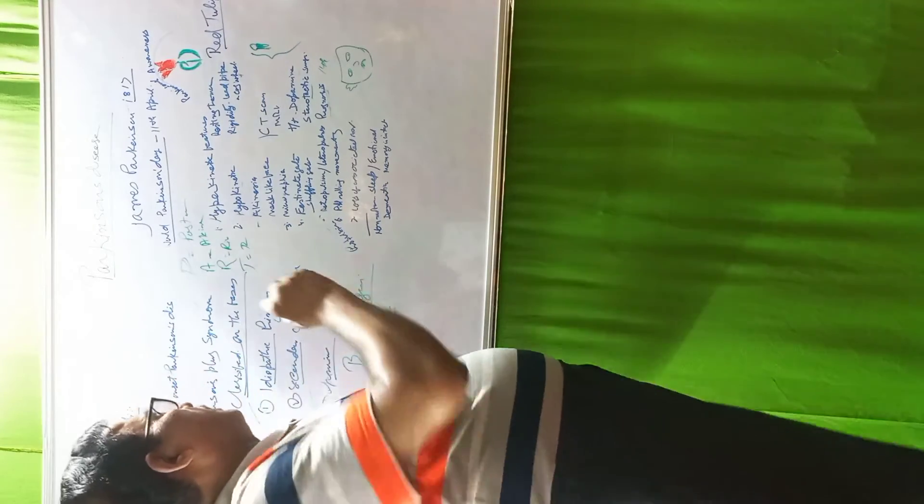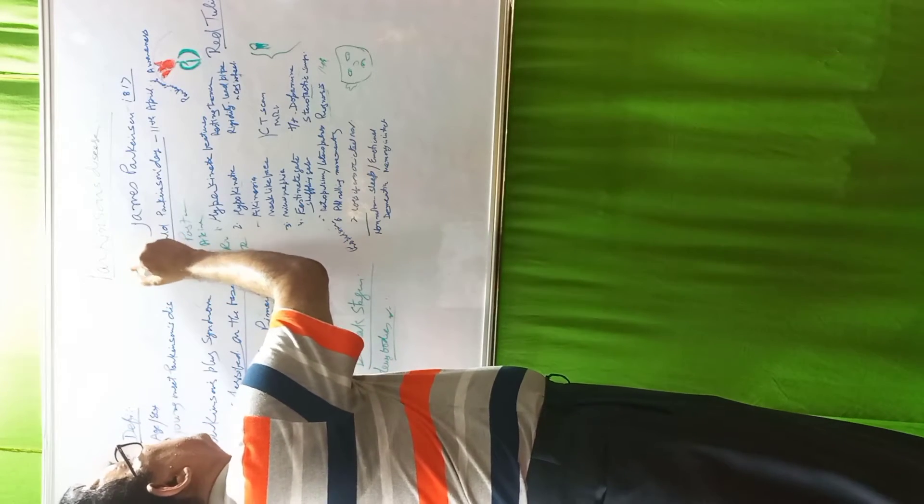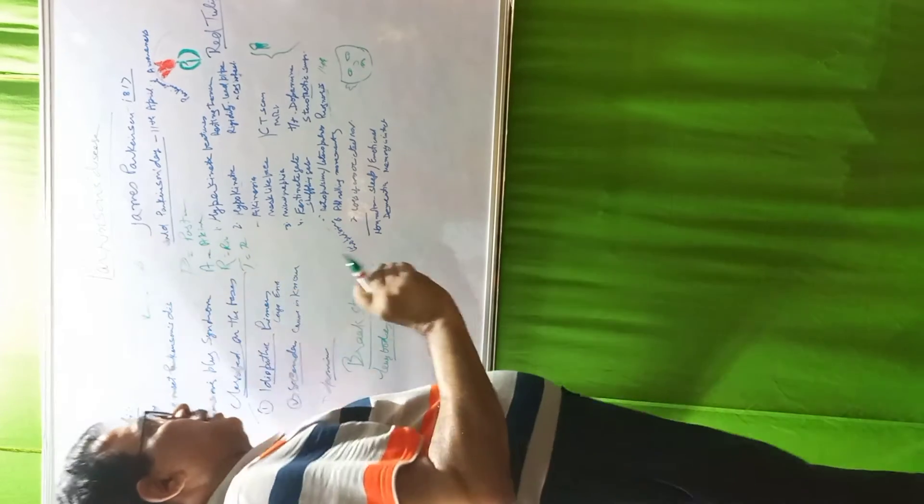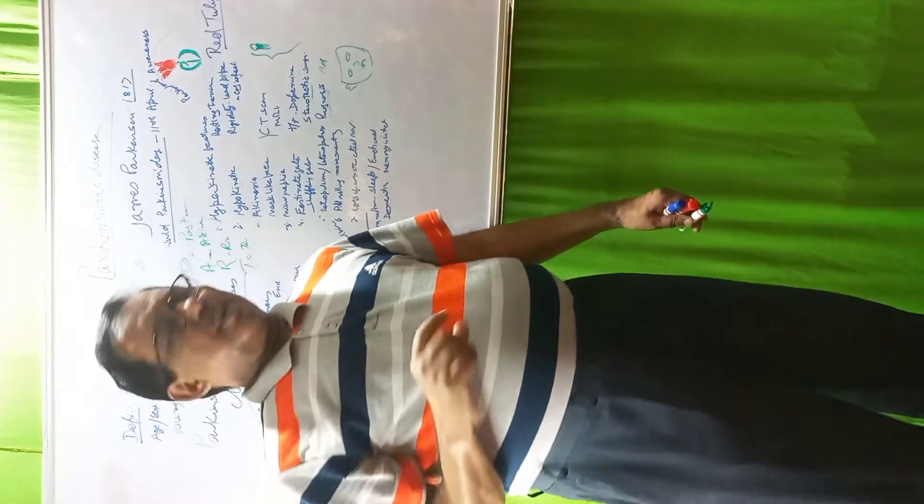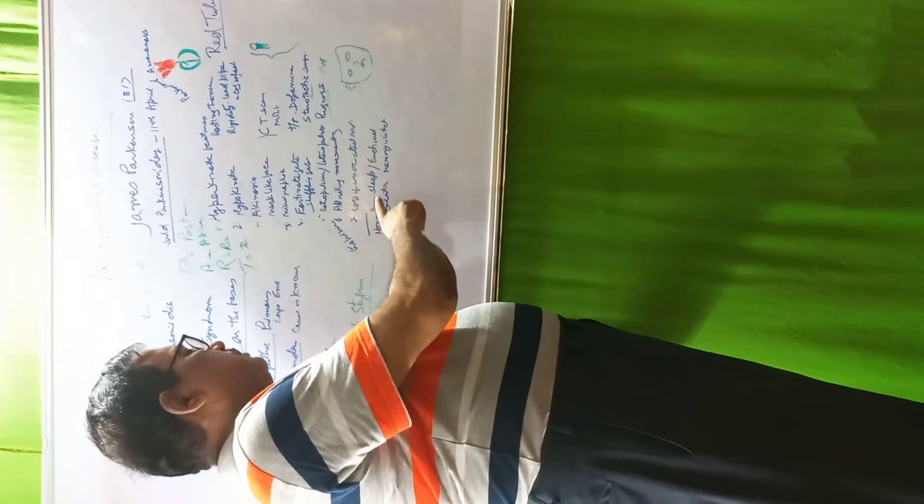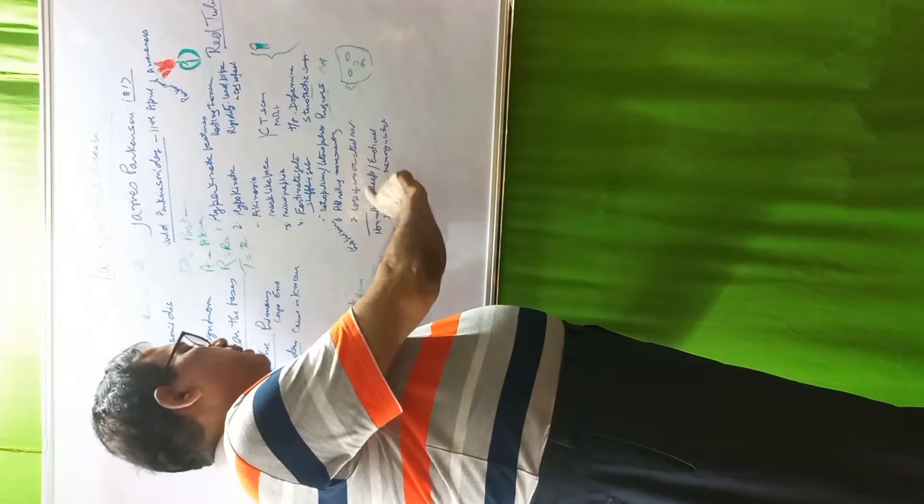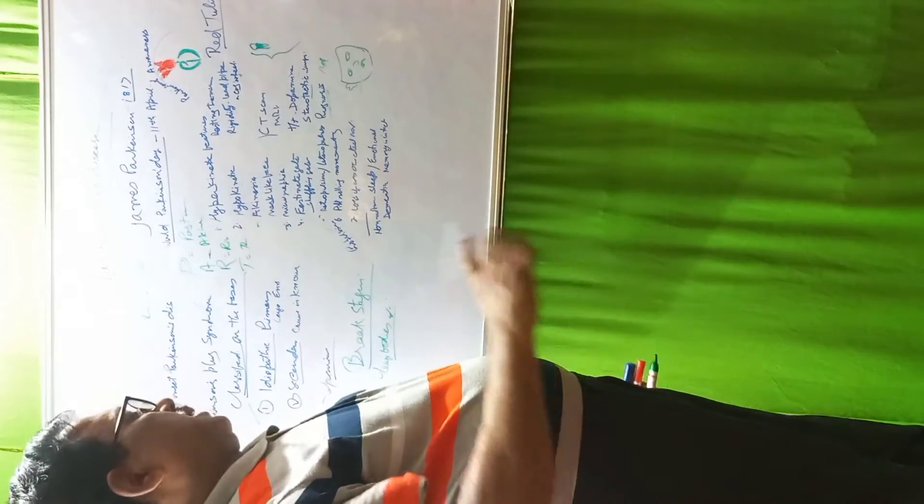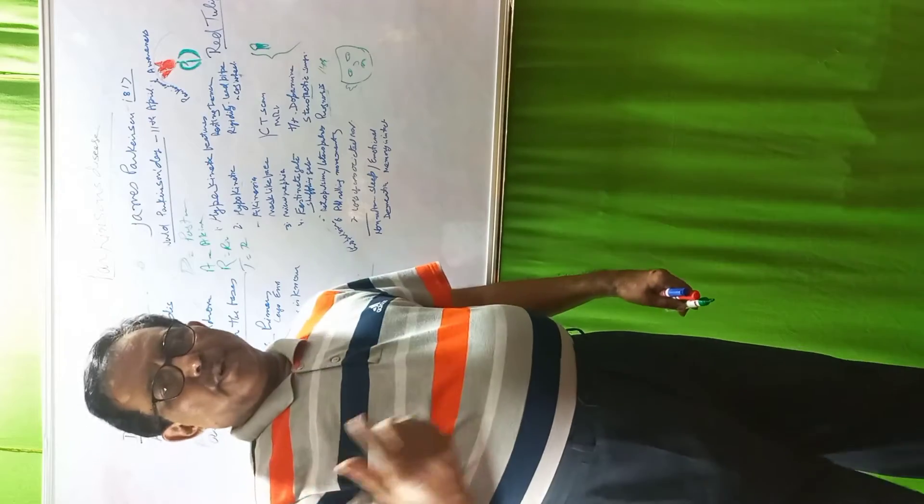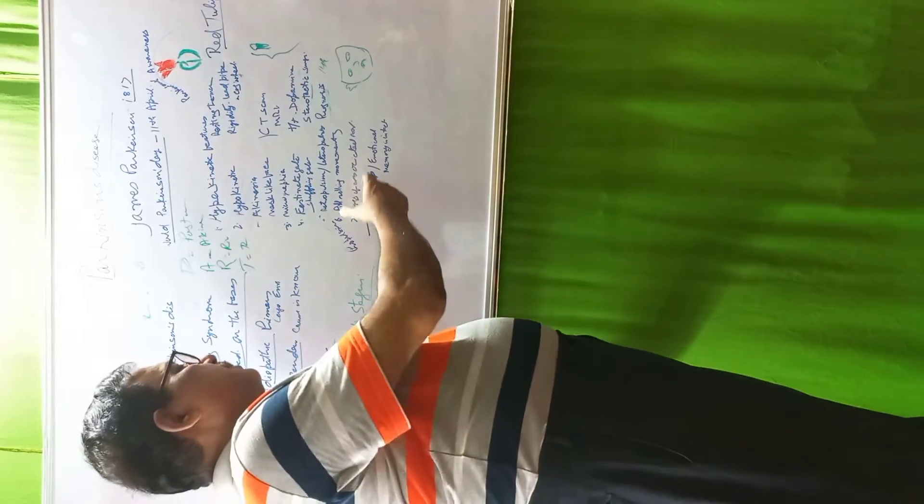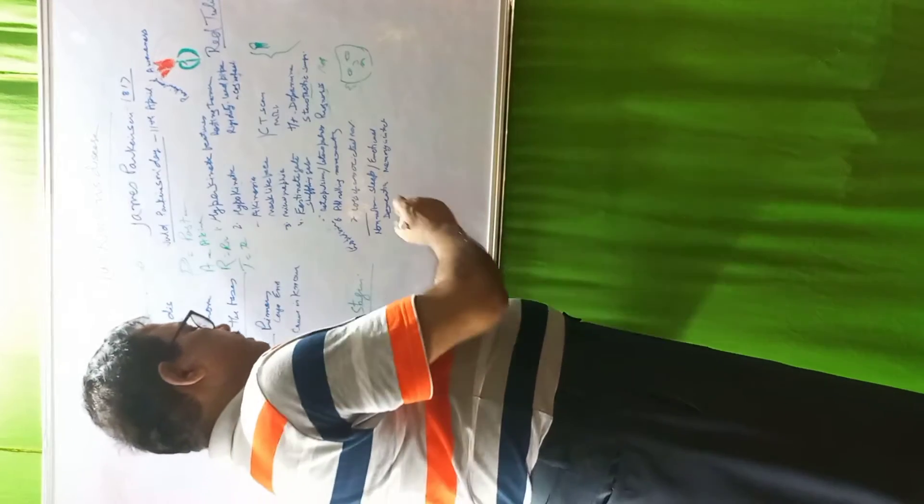Non-motor features include disturbance in sleep, emotional disturbance, and thought disturbance in earlier stages. These are non-specific and therefore these symptoms are overlooked. In later stage, in advanced stage, dementia will appear. Memory is intact up to terminal stage.